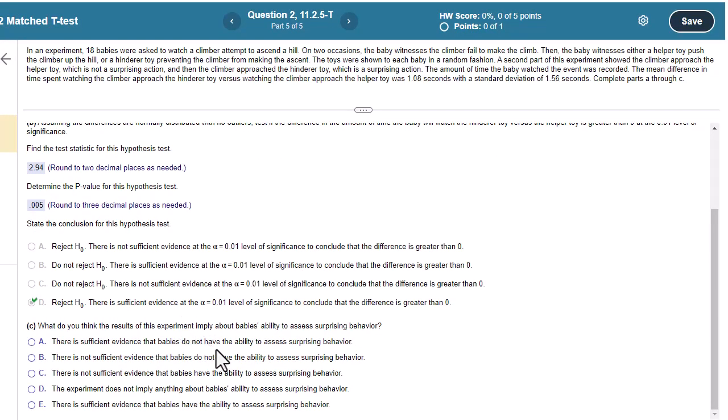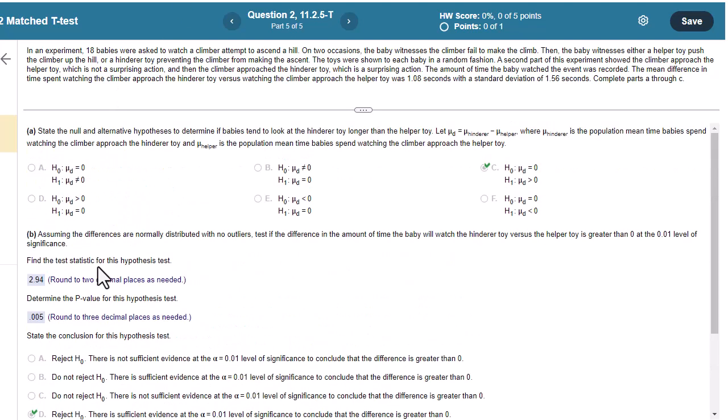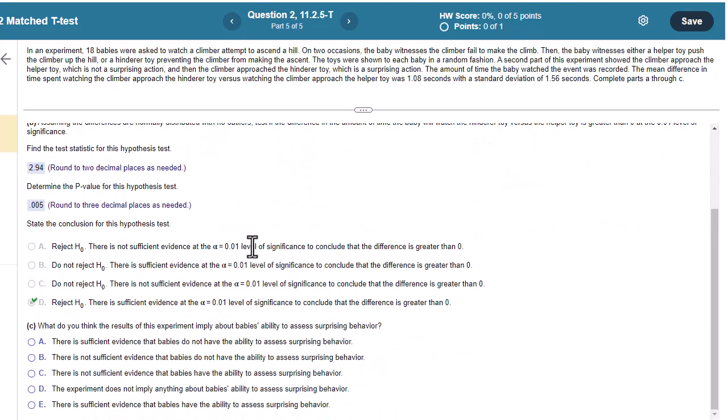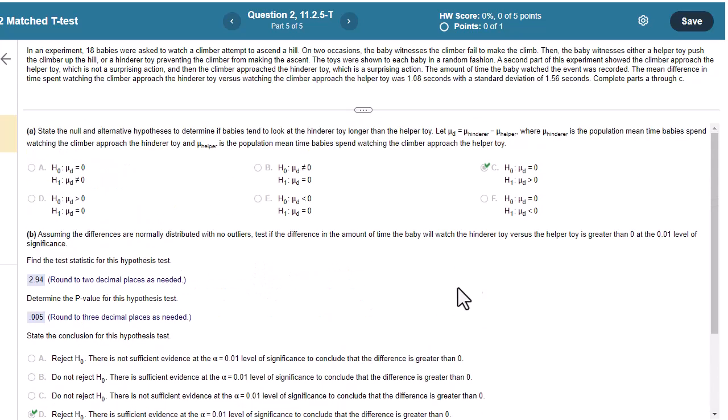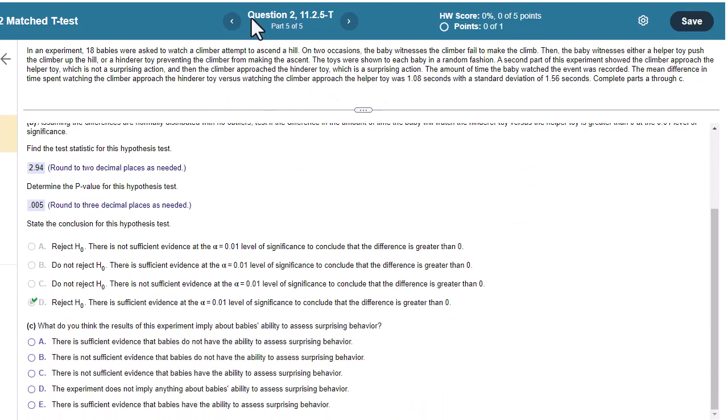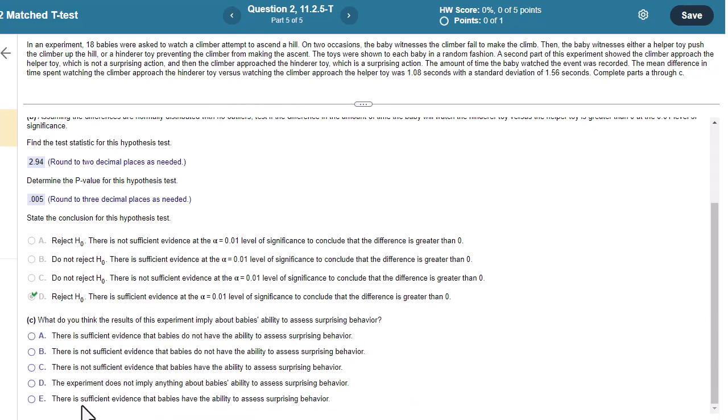So, what do you think the results of this experiment imply about the baby's ability to assess surprising behavior? So, when we reject H0, there is enough evidence. So, let's see what we got here. So, recall one thing to help you make this a little bit easier. Whenever you reject H0, you're just embracing HA. What was HA? Or H1. That the difference is greater than zero. That the babies have a way to detect surprising behavior.